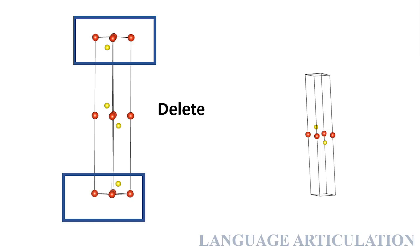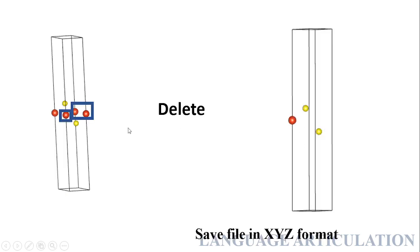If you see here, these three atoms — this one is actually the same as this one. So we have to delete these three atoms. Then we have to save the file in XYZ format.